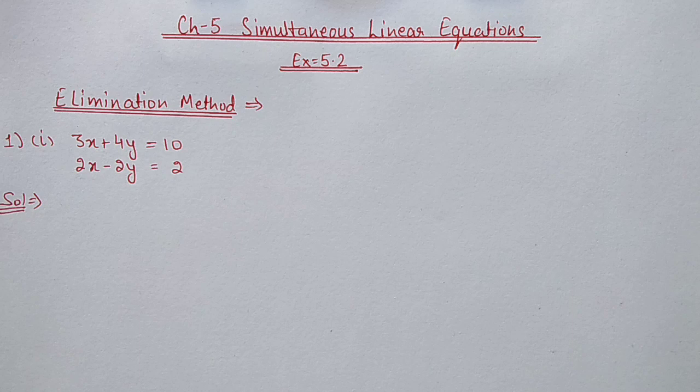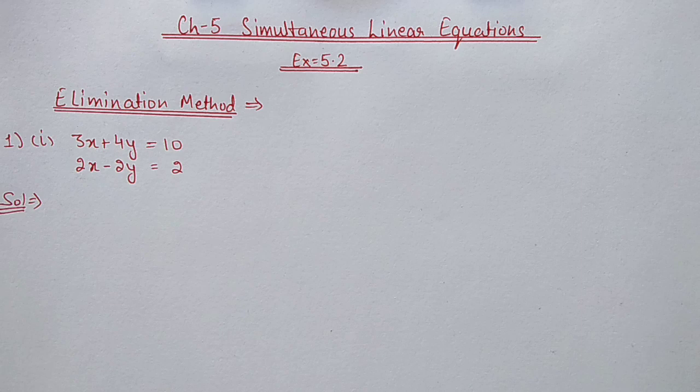Hello students, we are doing chapter number 5, simultaneous linear equations, exercise 5.2. This exercise is based on the elimination method. In the elimination method we will eliminate any one variable, either x or y, and with the help of that we will find out the value of x and y. So we will start this exercise.